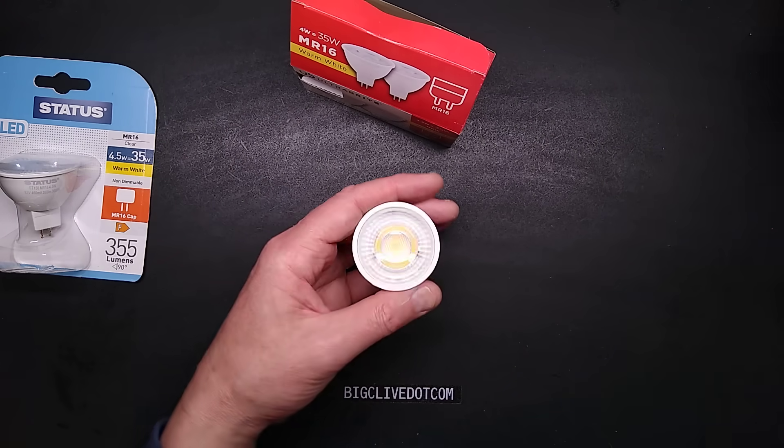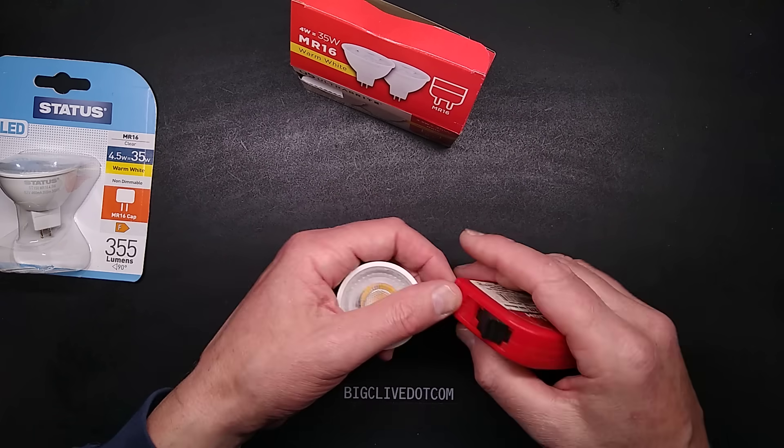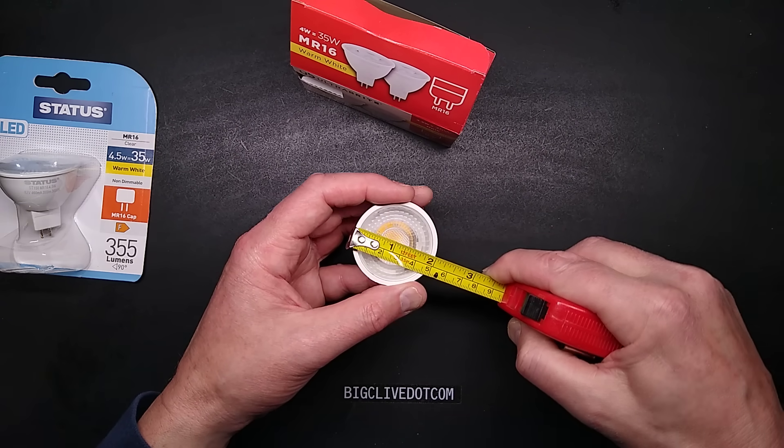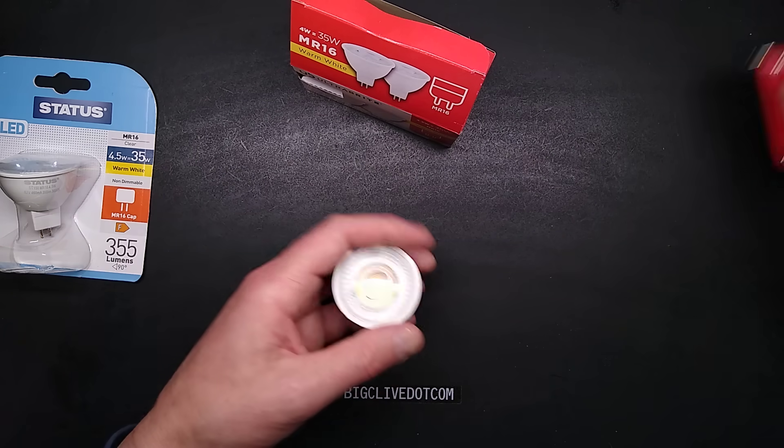The name MR16 comes from MR, metalized reflector, because they used to be metalized reflector, and 16 eighths of an inch in diameter, which is two inches. There we go, two inch diameter lamp. That's what those figures mean.